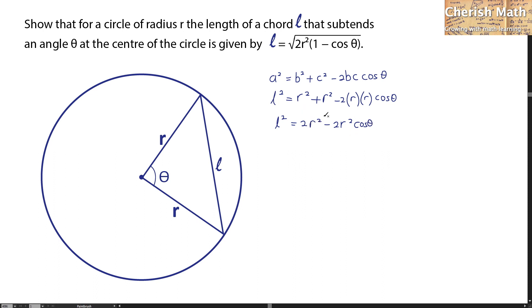Factorizing this gives l = √(2r²(1 - cos θ)). This matches the equation given above, so we've solved the puzzle.